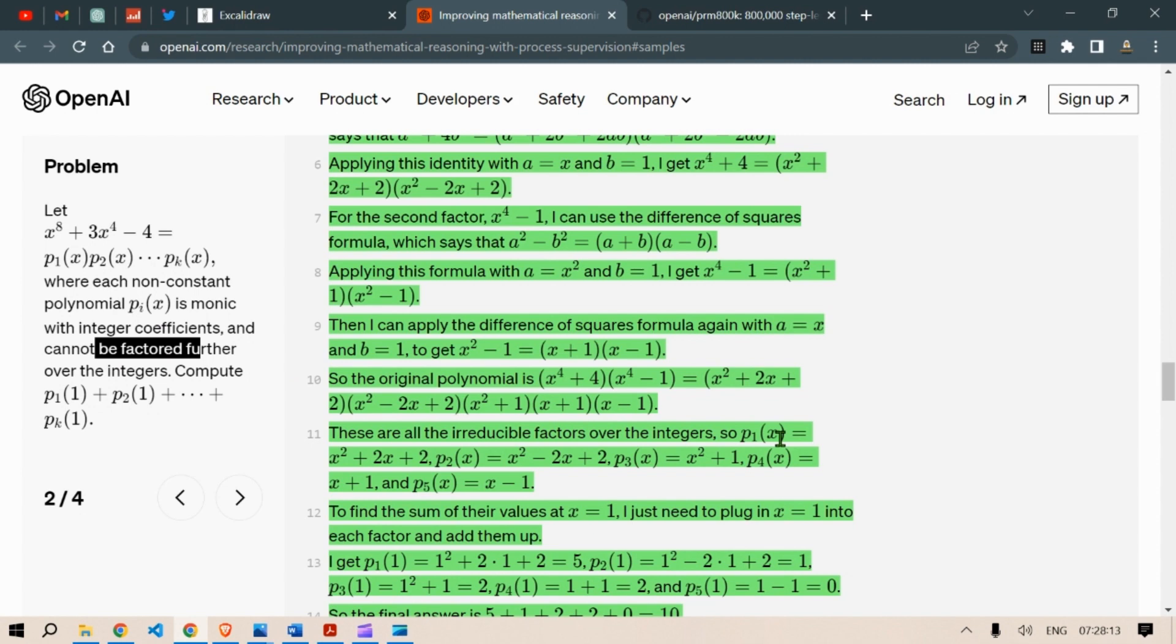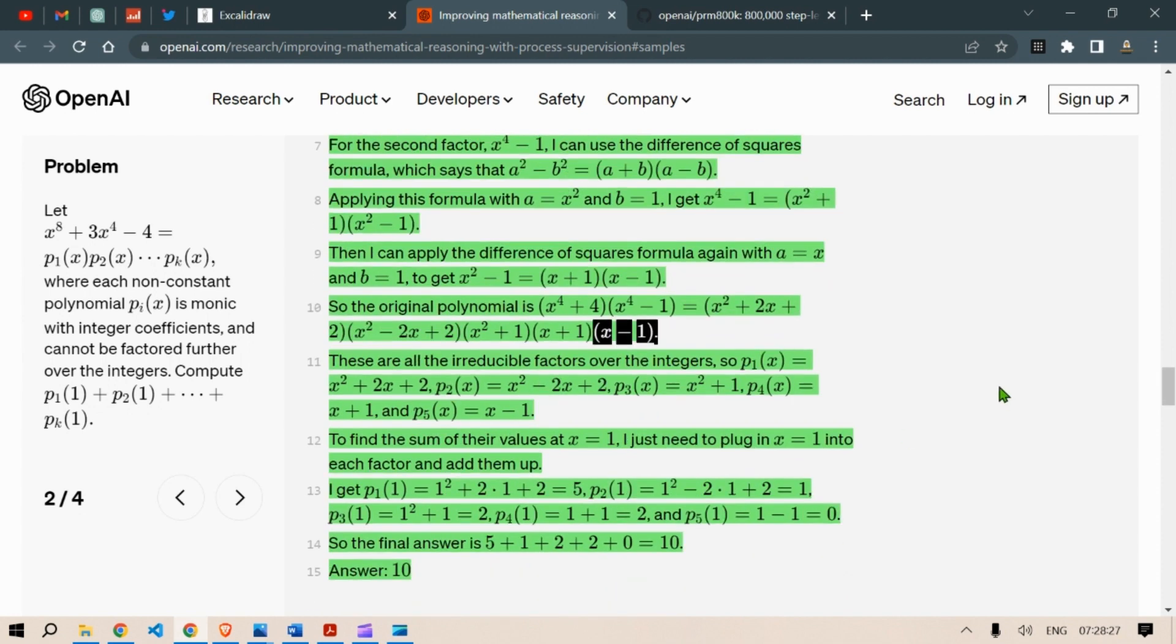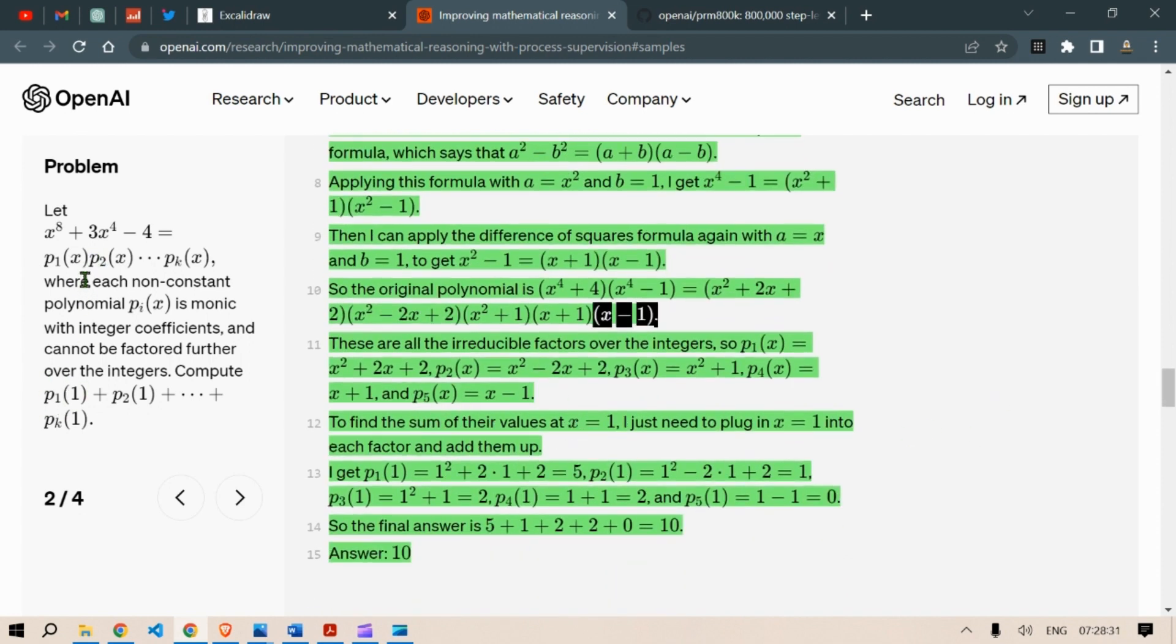So p1(x) will be the first term, p2(x) will be this, p3(x) will be x square plus 1, p4(x) is x plus 1, p5(x) is x minus 1. To find the sum of the values at x equal to 1, we replace x with 1 here, so 1 square plus 2·1 plus 2, this is 5. p2(x) is 1, p3 is 1 square plus 1, which is 2, p4 is 1 plus 1, which is 2, p5 is 1 minus 1, which is 0. So the final answer is 10.